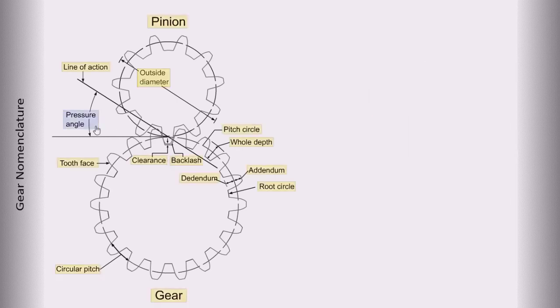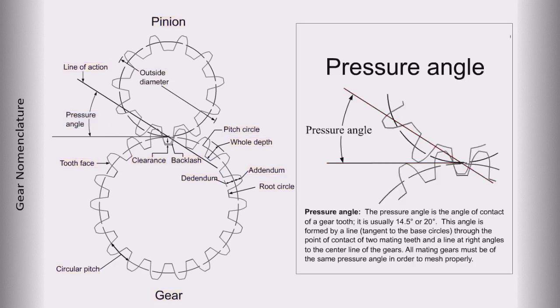Pressure angle. The pressure angle is the angle of contact of a gear tooth. It is usually 14.5 degrees or 20 degrees. This angle is formed by a line through the point of contact of two mating teeth and a line at right angles to the center line of the gears. All mating gears must be of the same pressure angle in order to mesh properly.